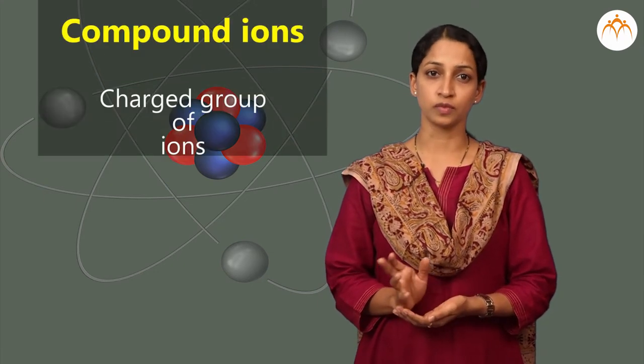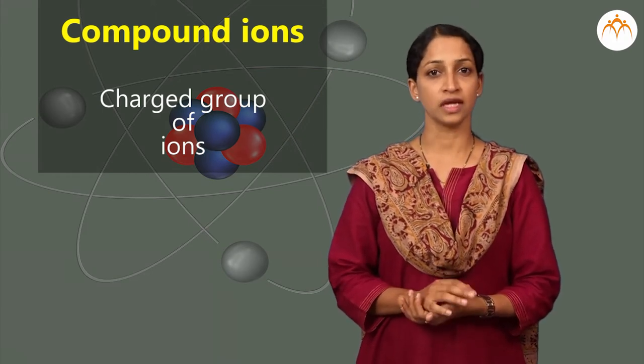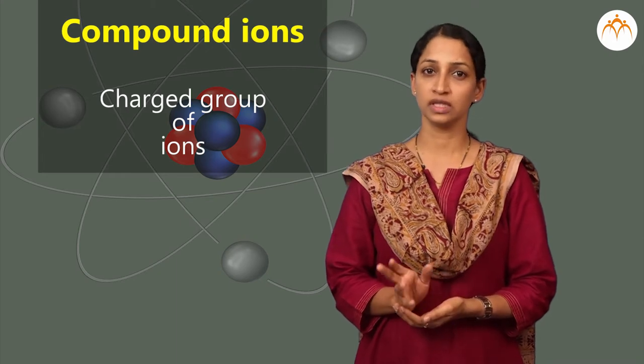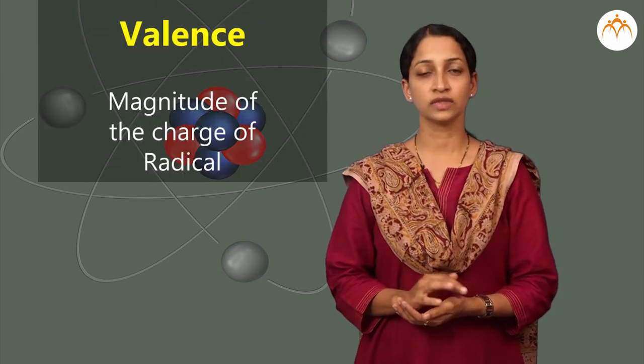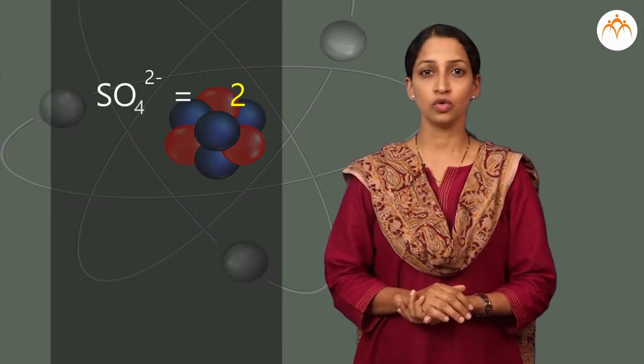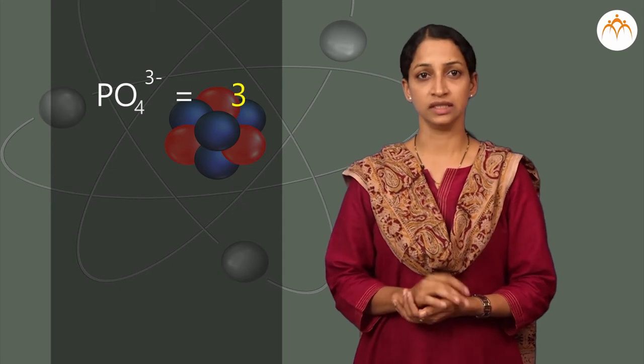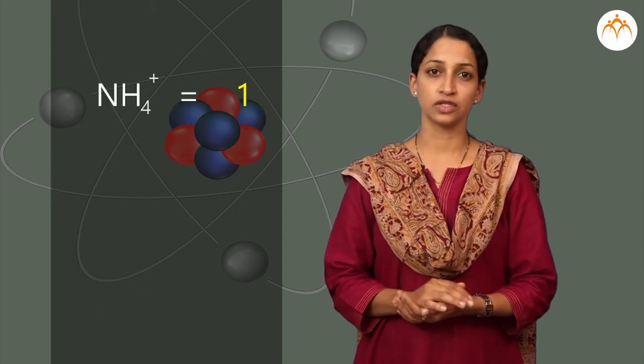Charged groups of atoms are called compound ions, like SO4^2-, NH4+, and PO4^3-. The magnitude of the charge of a radical is called valence. SO4^2- has valence 2. PO4^3- has valence 3. NH4+ has valence 1.